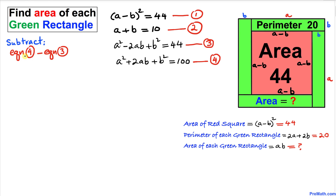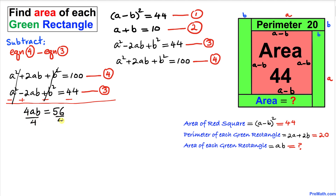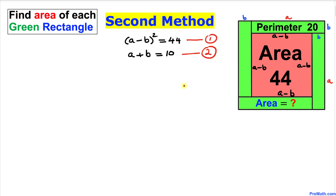Now let's subtract equation 3 from equation 4. Changing the signs of equation 3 and subtracting: the a squared terms cancel, 2ab plus 2ab gives 4ab, the b squared terms cancel, and on the right-hand side 100 minus 44 is 56. Dividing both sides by 4, we get a times b equals 14. That's the area of the green rectangle — and that's Method 1 complete.